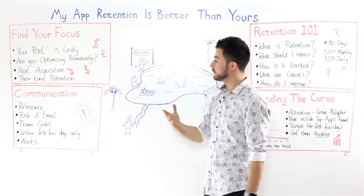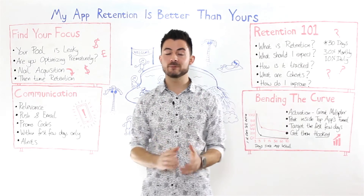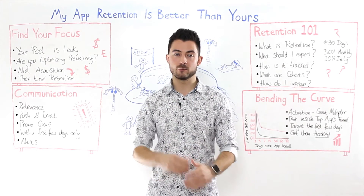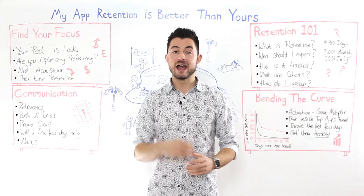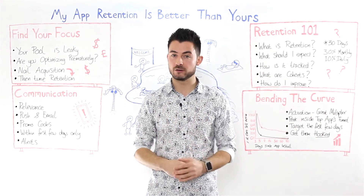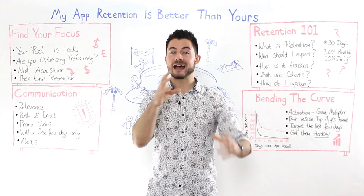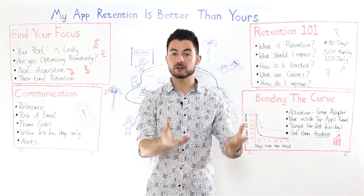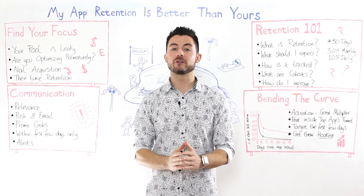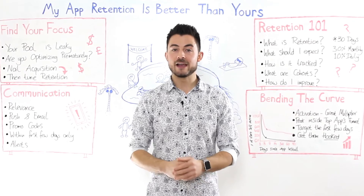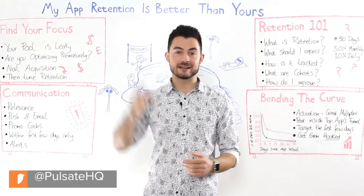What I want to leave you with: don't forget we don't want this leaky pool. You will drip out some users, but before you dial up your spend on acquisition, tune retention first. Cohort analysis is a great opportunity to understand what performance improvements, communication differences, and feature changes actually impact users at the retention stage. Bending that retention curve won't happen with cheap communication tactics — it really happens at the activation stage. Don't forget to welcome users in and have them achieve success early. Thanks for tuning in — leave a comment below, and send us a tweet at @pulsatehq.